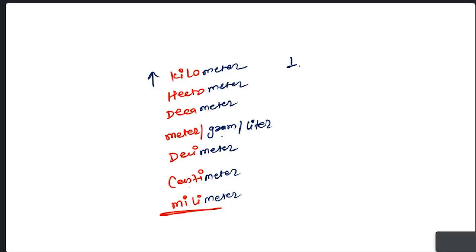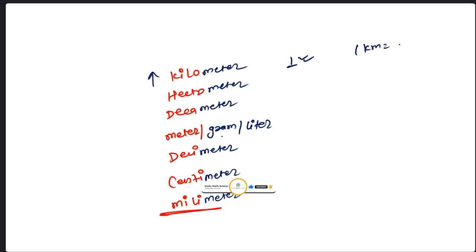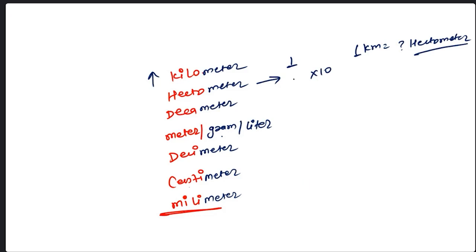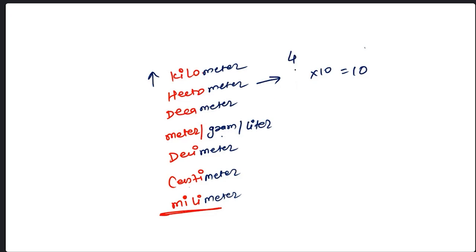Here, kilo is the highest value. If you are going in the backward direction, the value will decrease — or rather increase in number. If I ask you: one kilometer equals how many hectometers? The simple rule is: if you go top to bottom, multiply by 10 for each step of difference. One difference means multiply by 10. So 1 km = 10 hectometers, and 4 km = 40 hectometers.